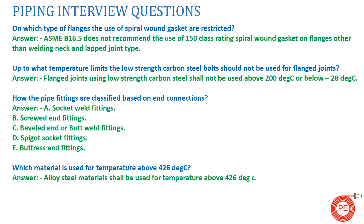The first question is: on which type of flanges is the use of spiral wound gaskets restricted? As you know, we use gaskets to make our joints leak-proof. As per ASME B16.5, it does not recommend the use of 150 class rating spiral wound gaskets on flanges other than weld neck and lap joint type. So spiral wound gaskets can only be used on these two flange types: weld neck and lap joint.